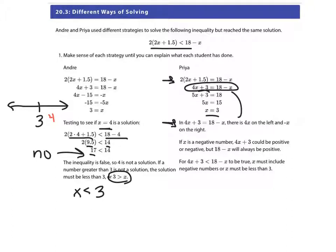There is a 4x on the left and a negative x on the right. If x is a negative number, 4x + 3 could be positive or negative but 18 - x will always be positive. For 4x + 3 is less than 18 - x to be true, x must include negative numbers or x must be less than 3.